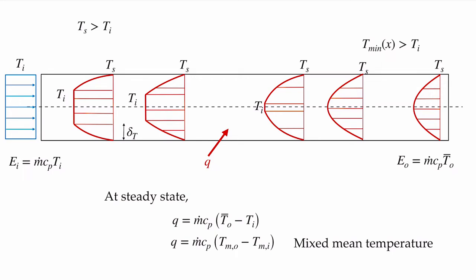The difference between what's carried out and what came in had to come in through the walls of the pipe. That difference is going to be equal to the mass flow rate times the specific heat times the average temperature at the outlet minus the temperature at the inlet. In general, we want to use the correct average value, and we'll call that the mixed mean temperature. So the heat transfer into the pipe equals m-dot times Cp times the mixed mean temperature at the outlet minus the mixed mean temperature at the inlet.